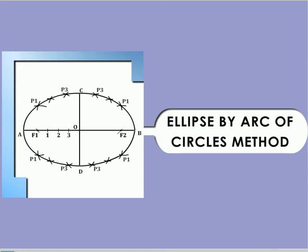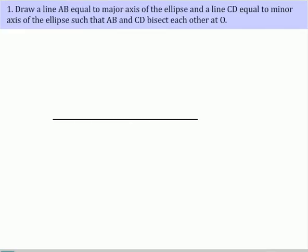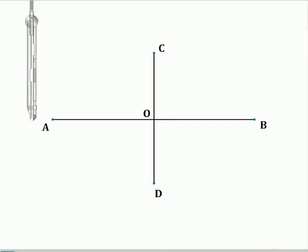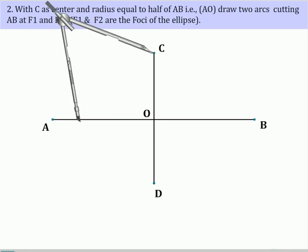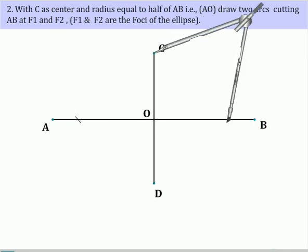Ellipse by Markov circuits method. Draw a line AB equal to the major axis of the ellipse and a line CD equal to minor axis of the ellipse such that AB and CD bisect each other at O. With C as center and radius equal to half of AB, that is AO, draw two arcs cutting AB at F1 and F2. F1 and F2 are the foci of the ellipse.